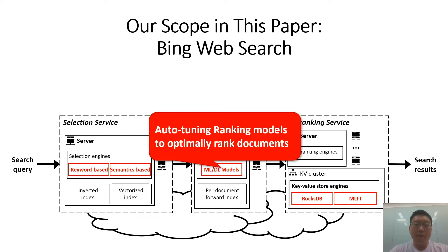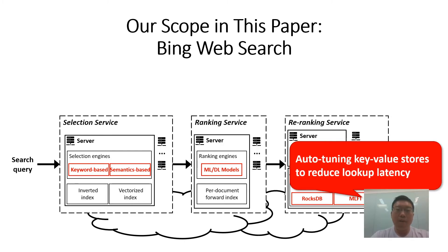Second, given documents from the selection service, the ranking service ranks these documents with machine learning models. These models can be gradient-boosted decision trees, or GBDT. Our job is to auto-tune the GBDT model hyperparameters to improve ranking performance. Finally, the ranking service adds additional content to the search results, such as news articles or multimedia contents. We auto-tune key-value stores to reduce lookup latencies — these can be open-sourced stores such as RocksDB, or in-house solutions such as MLFT.